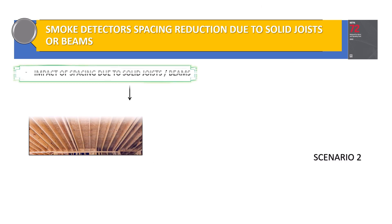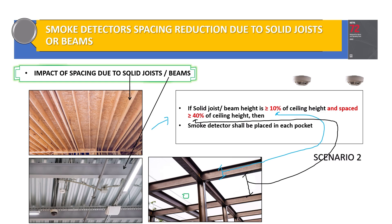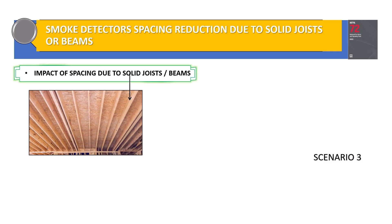In Scenario 2, you have solid joists or beams where the beam or solid joist height is greater than or equal to 10 percent of the ceiling height, and the spacing between the beams or solid joists is greater than or equal to 40 percent of the ceiling height. In this case, we need to place the smoke detector in each pocket, as you can see on your screen.